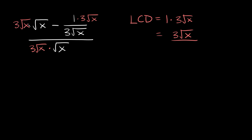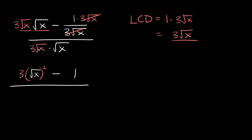Here we have 3 times the square root of x times the square root of x. Notice we have square root of x times the square root of x, which we can write as the square root of x squared, and then we're still multiplying by 3. Then we subtract the other term — we have 3 root x on top and 3 root x on the bottom, so those cancel out, and we're left with just 1 in the numerator, so we have minus 1. On the bottom we have 3 times the square root of x squared.